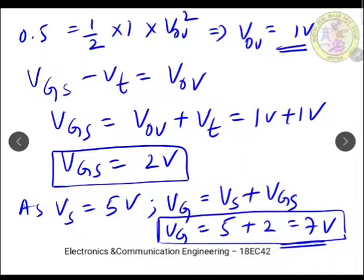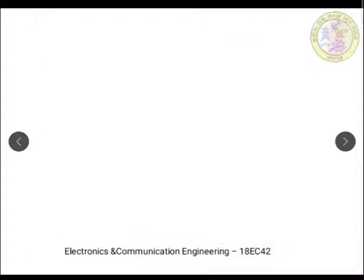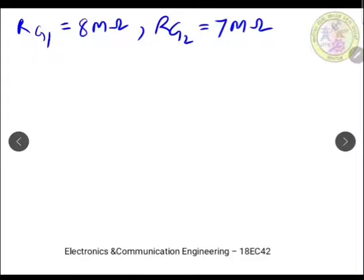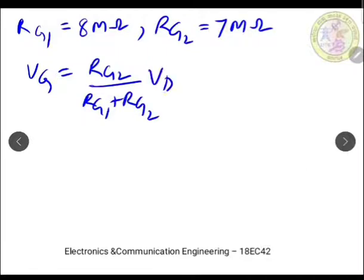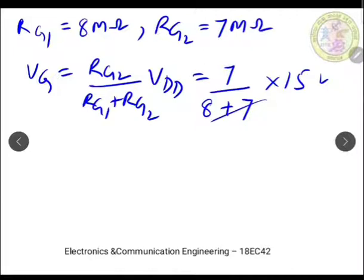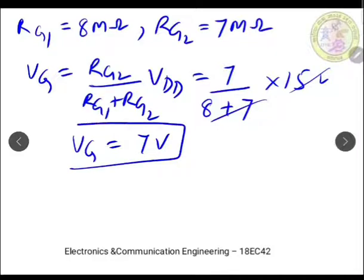Now we design Rg1 and Rg2 to set Vg = 7 volts. We select Rg1 = 8 MΩ and Rg2 = 7 MΩ. Using the voltage divider formula: Vg = Rg2/(Rg1 + Rg2) × Vdd = 7/(8+7) × 15 = 7 volts. This confirms the design. So Rg1 = 8 MΩ, Rg2 = 7 MΩ, Rd = 10 kΩ, Rs = 10 kΩ.